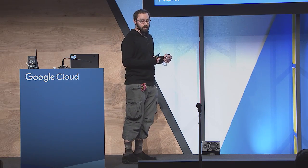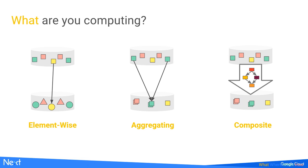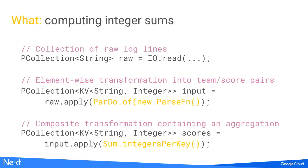For the 'what' question, there are element-wise operations, aggregations, and composite operations — taking more primitive operations and turning them into higher-level concepts like a sum. In our example, here's some pseudo-Java code: we read log lines into a PCollection — the Beam and Dataflow notion of a potentially massive collection of data. Then we apply a parser to produce key-value pairs of team and score, and finally apply a composite sum-of-integers-per-key operation to compute per-team scores.